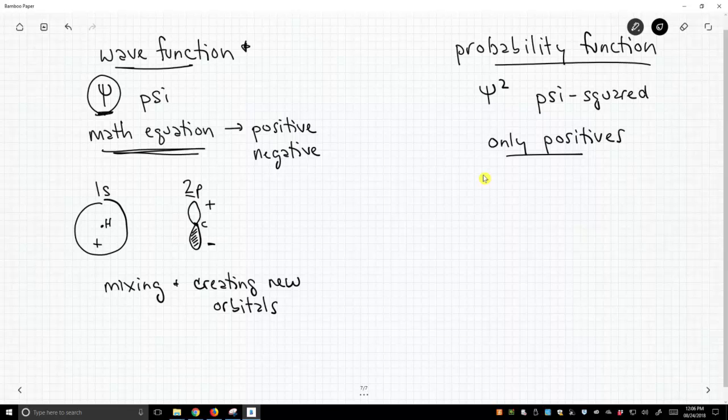So when do you use a probability function? We use a probability function when people are just talking about the shape of an orbital. So over here on the left, I've shown 2p. This has mathematical signs, plus or minus, and that represents the mathematical depiction of this orbital. But sometimes you just want to say, hey, what's a p orbital look like? It looks like this.